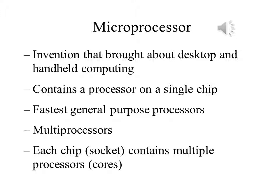Not only have microprocessors become the fastest general-purpose processors available, they are now multiprocessors. Each chip, called a socket, contains multiple processors called cores, each with multiple levels of large memory caches and multiple logical processors sharing the execution units of each core. As of 2010, it is not unusual for even a laptop to have two or four cores, each with two hardware threads, for a total of four or eight logical processors.